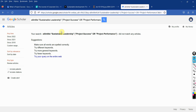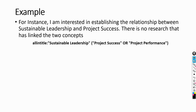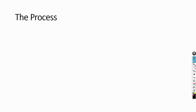If you want to learn how to build such searches, I am going to share a reference to another video on Google Scholar. In this study, I am proposing whether sustainable leadership can be linked to project success. There is no research that has linked sustainable leadership with project success or project performance. So what is the process of developing this link?